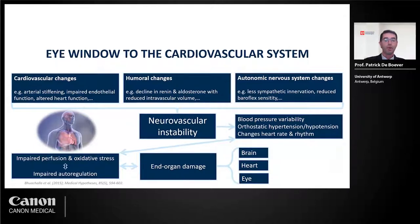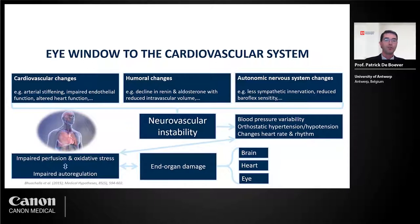All these different factors lead to a neurovascular system that gets disturbed, because there's a close interaction between the vascular system and the neurological system. This neurovascular instability, which may be subclinical at first, will lead to blood pressure variations, orthostatic hypertension, hypertension, and changes in heart rate. This has an impact on impaired perfusion — different tissues get less oxygen, removal of CO2 and waste products becomes less efficient, and we get inflammation and oxidative stress, which catalyzes further impaired autoregulation.